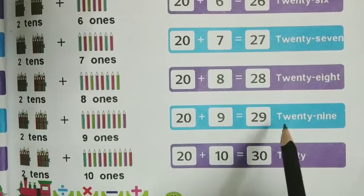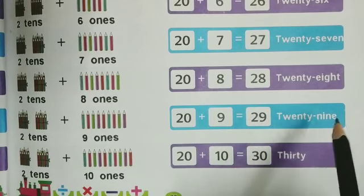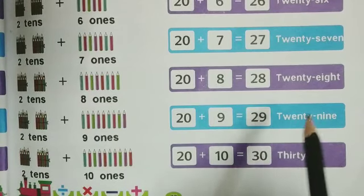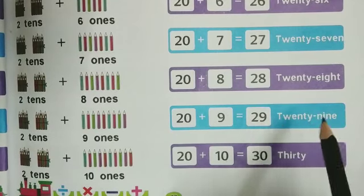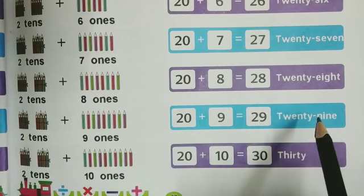The spelling of 29 is T-W-E-N-T-Y (20) N-I-N-E (9): twenty-nine. 29.